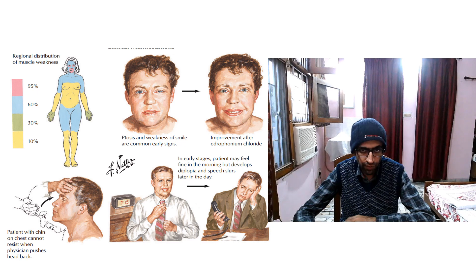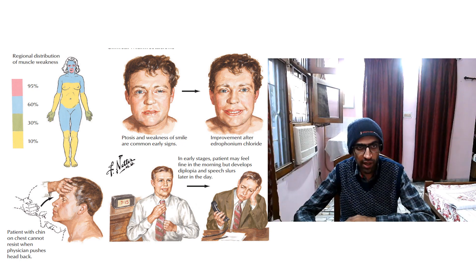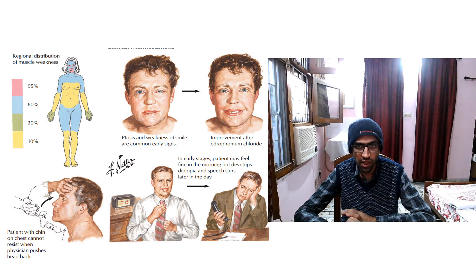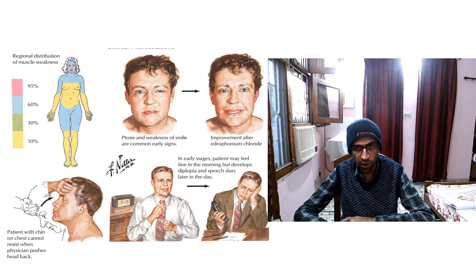In myasthenia gravis, there is no effect on the central nervous system. Classic symptoms include ptosis — drooping of the eyelid — representing weakness of the ocular muscles.